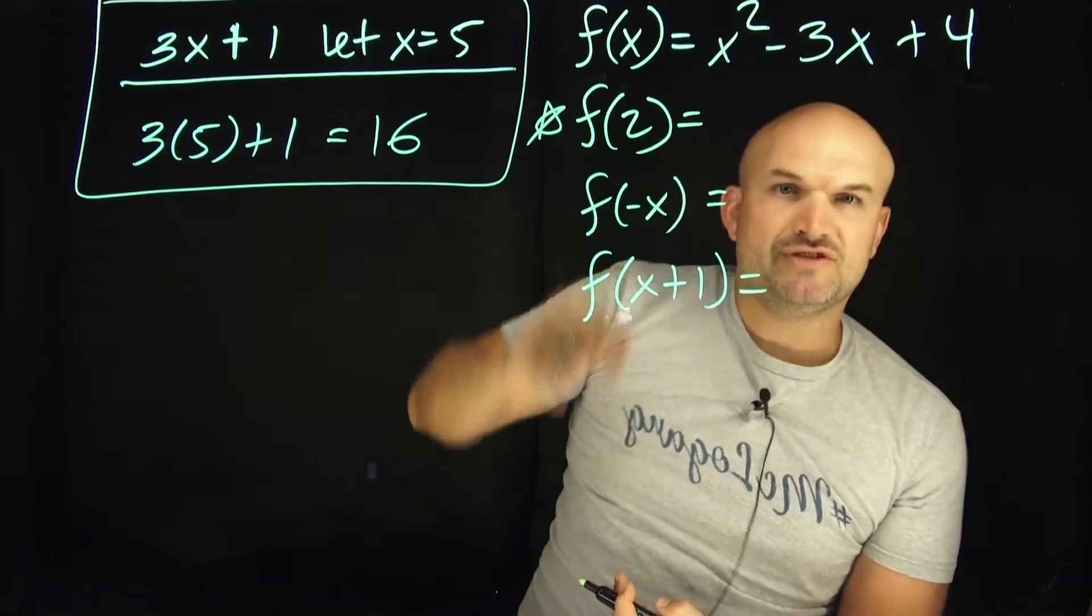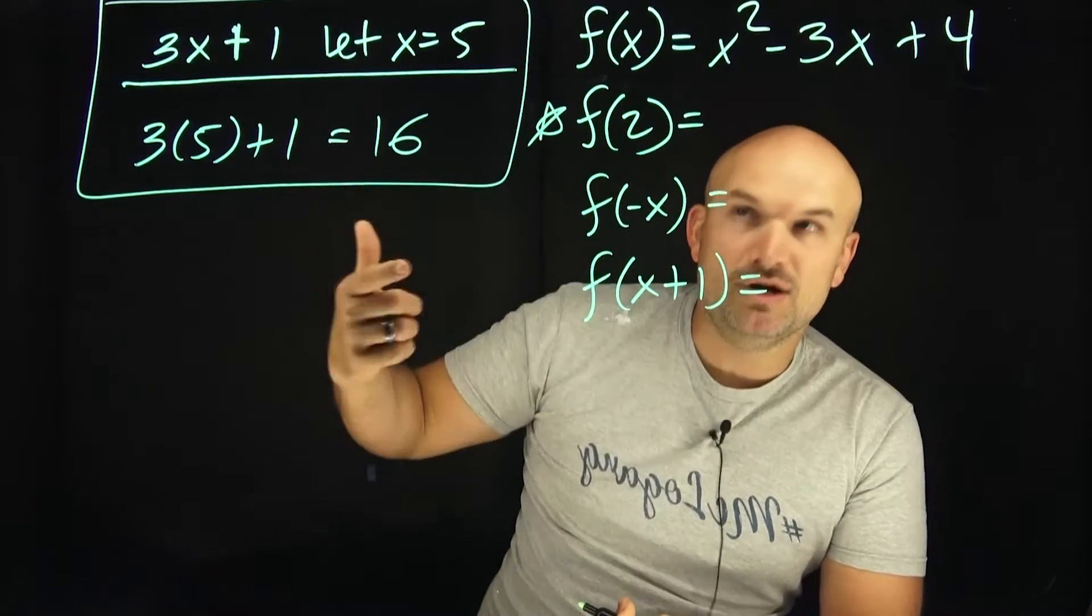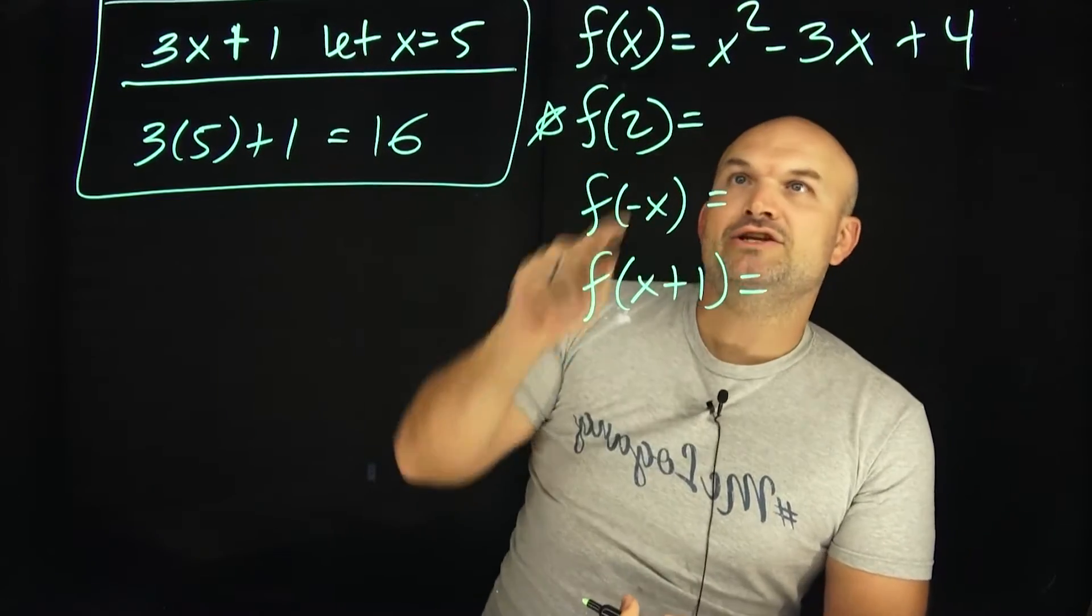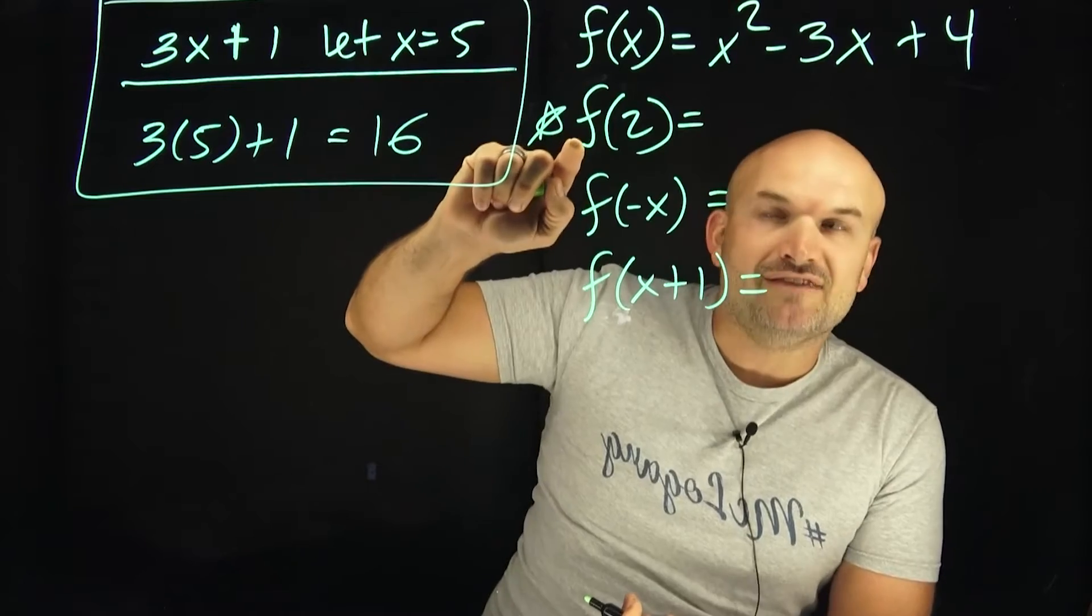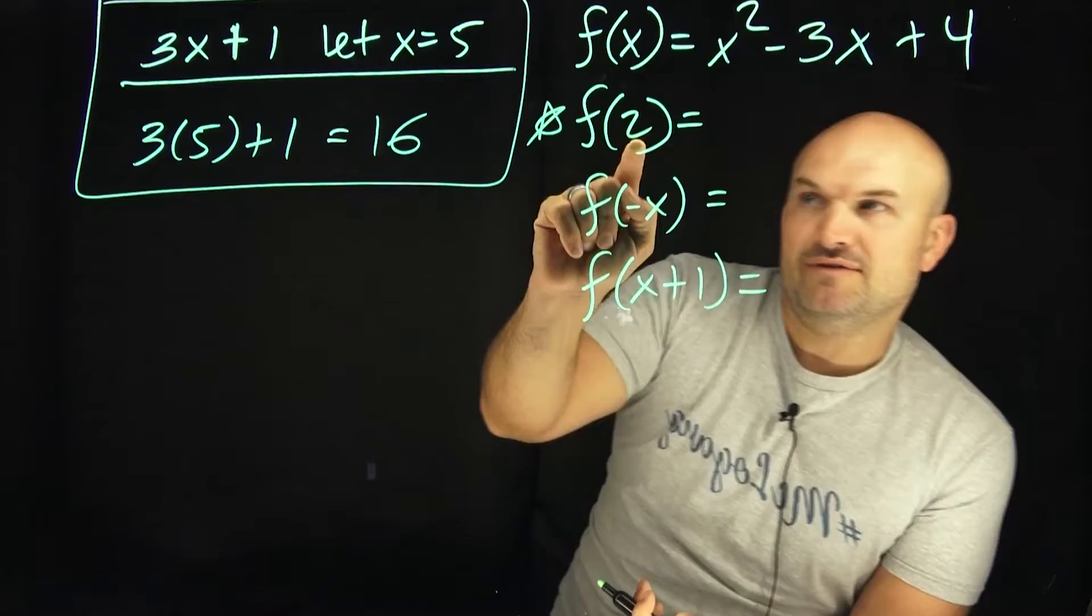So when we say f of 2, what we're really saying is the same thing we said over here: let x equal 2. Let the input variable represent 2. All I need to do if I want to find the value of my function f for the value of my input value 2, I just need to replace x, which is the input variable, for a value of 2.